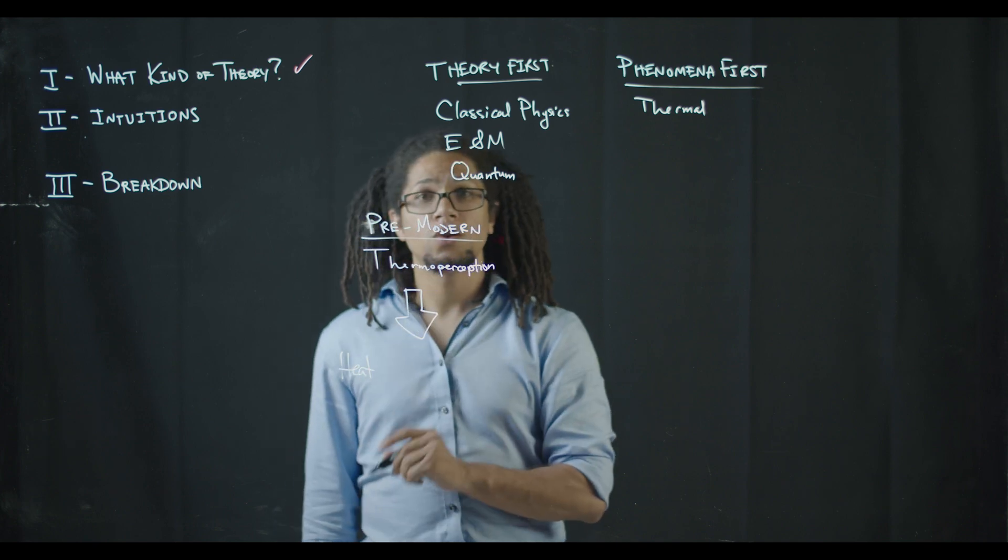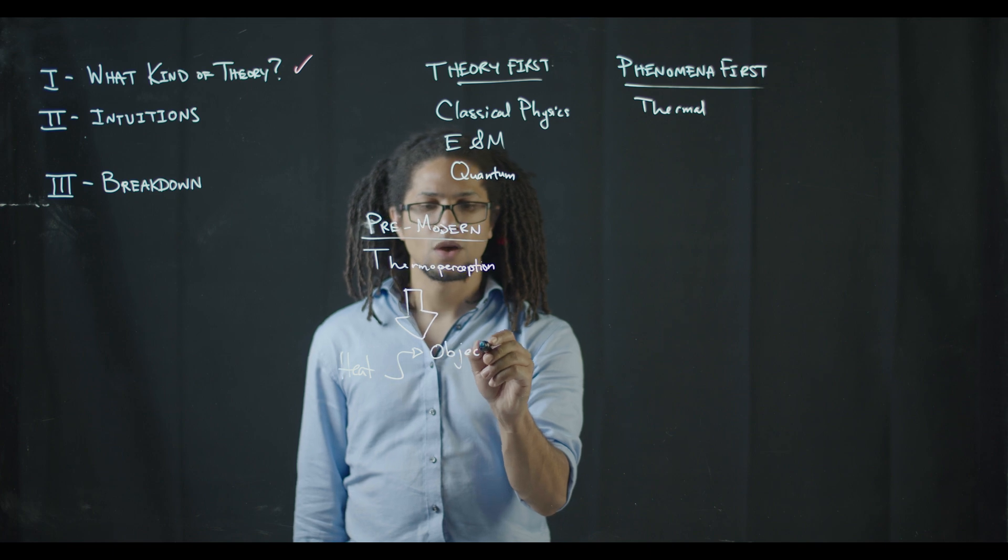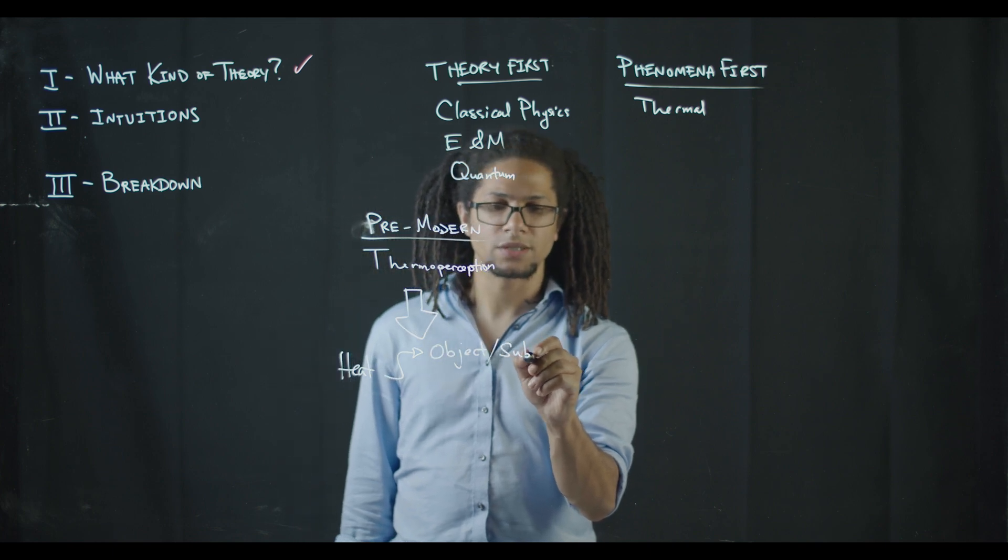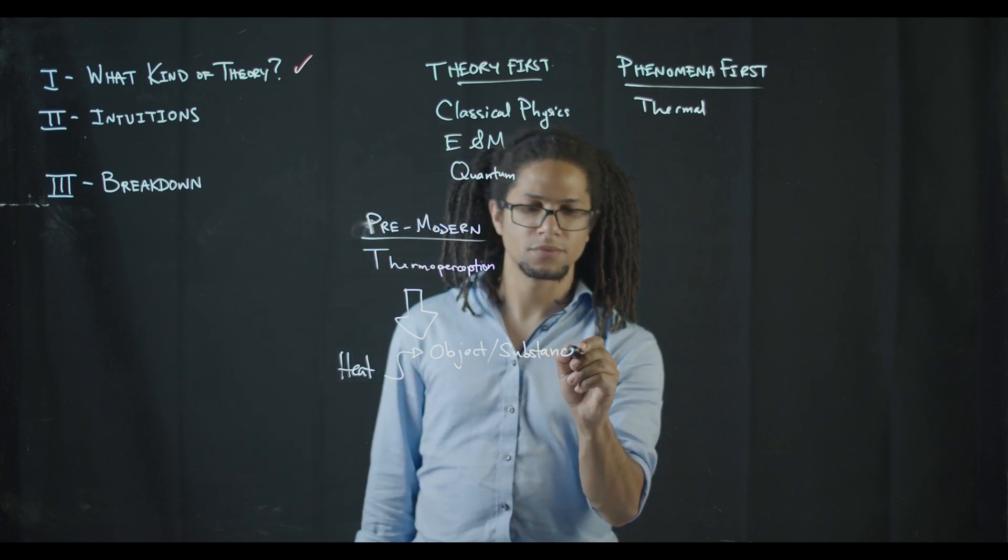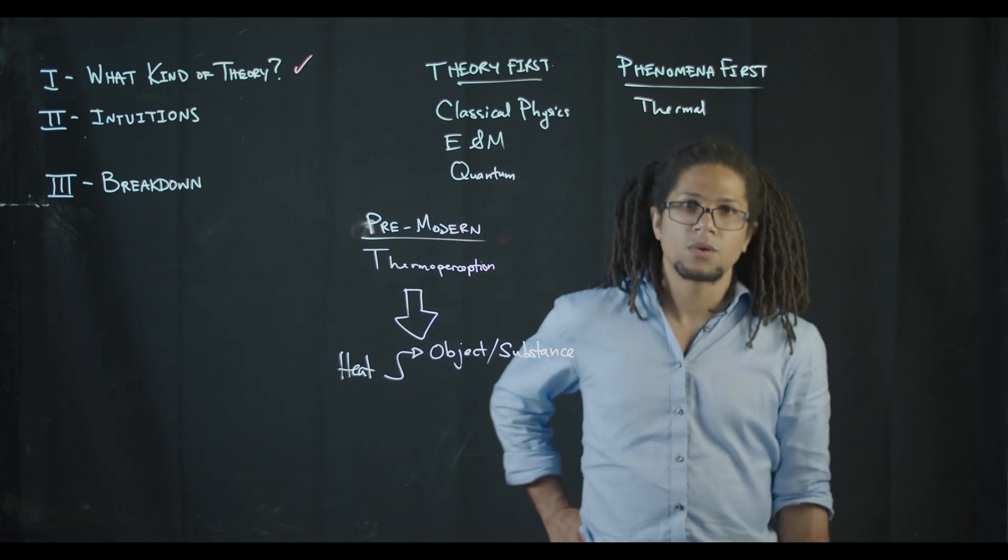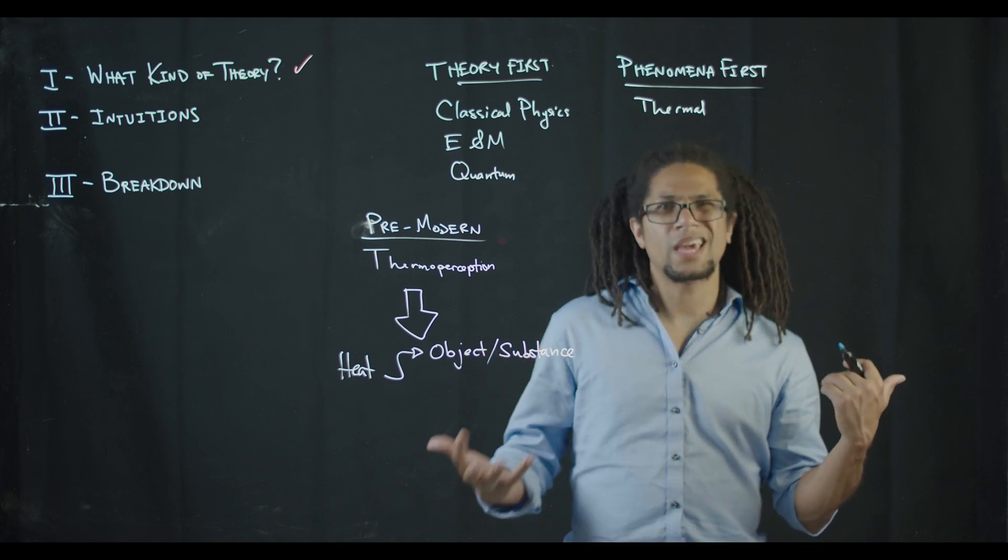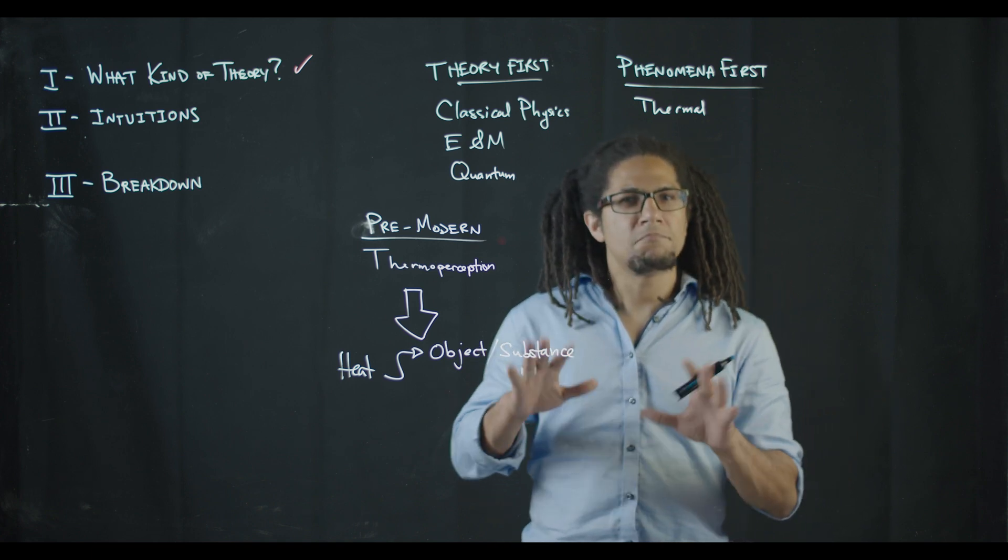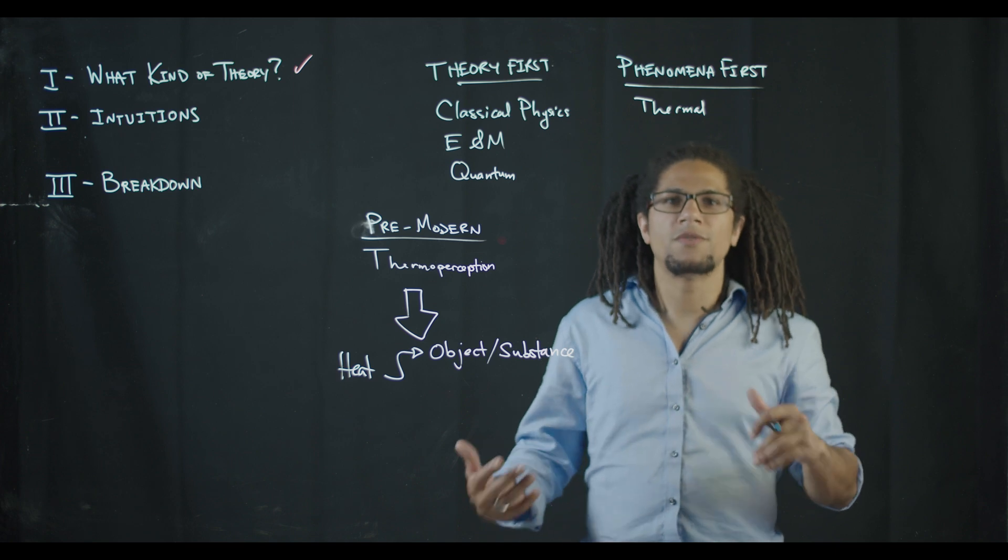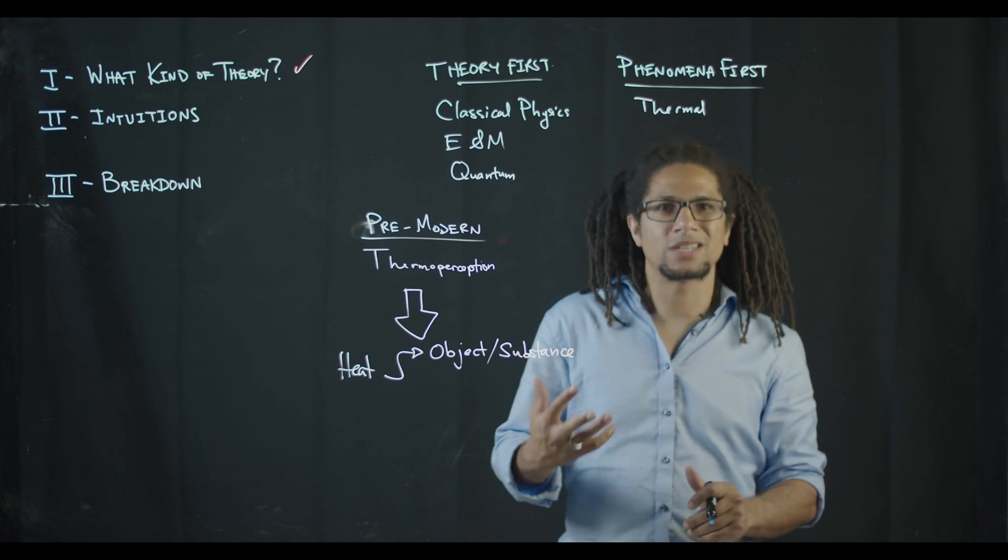So heat could be some sort of object in itself. We might also say a substance. So, okay, heat is an object or a substance. It's something that we can't see directly, but maybe that's there in some invisible sense, affecting things, and that's what we're feeling when we touch something hot.